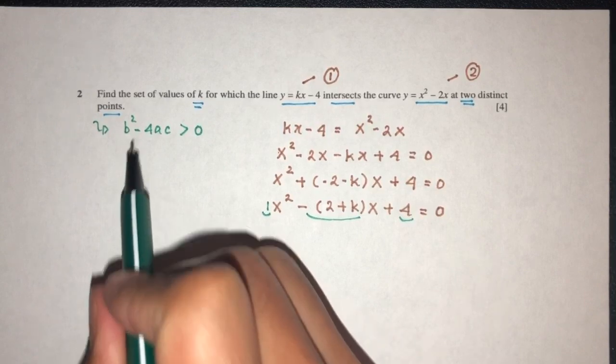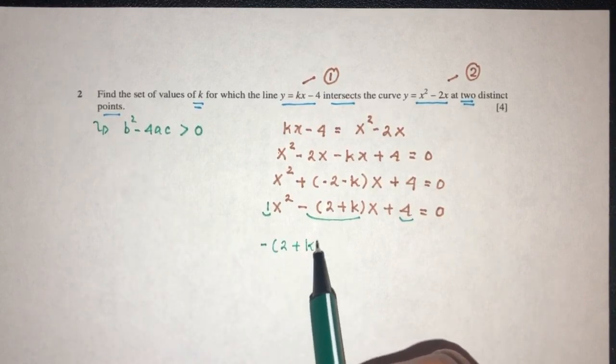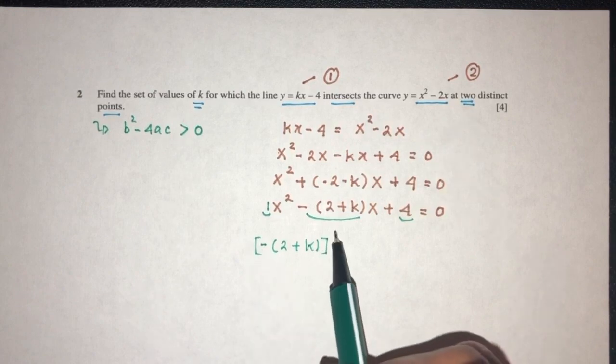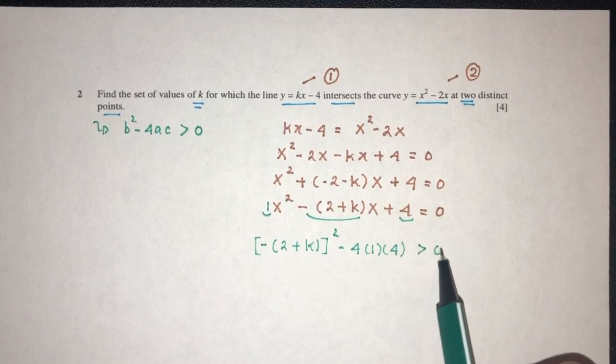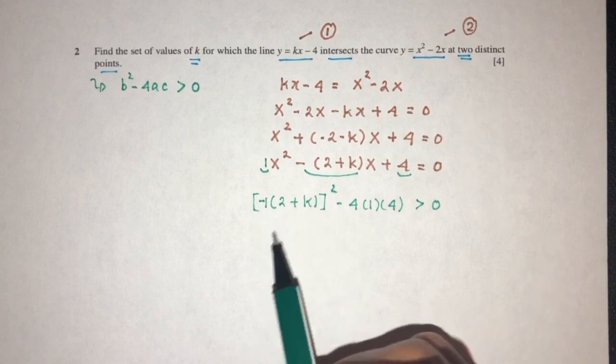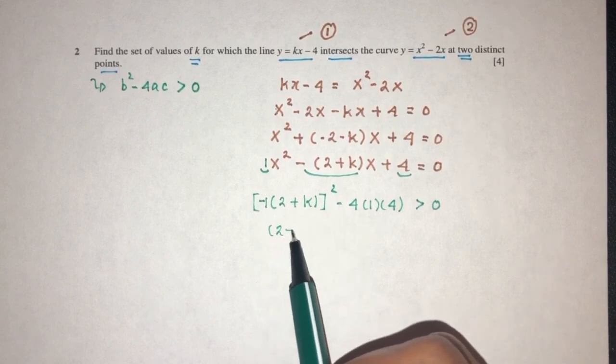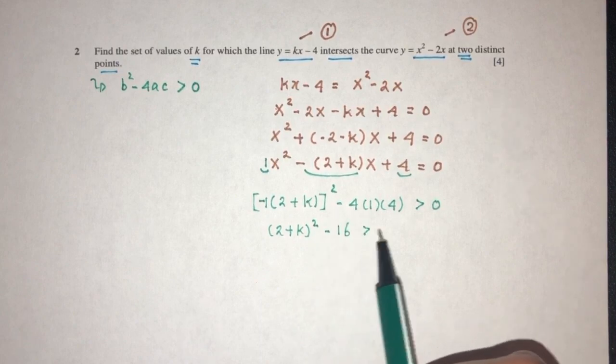So b² - 4ac is what? b² is this b² minus 4 times a times c has to be more than zero. Let's simplify. First, minus 1 squared is 1. You will have (2 + k)² that will be minus 16 more than zero.